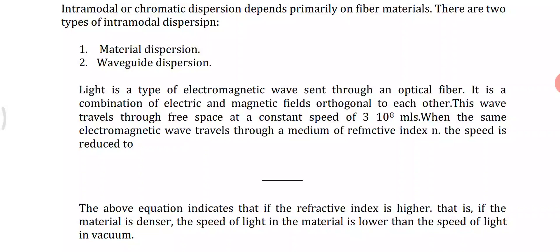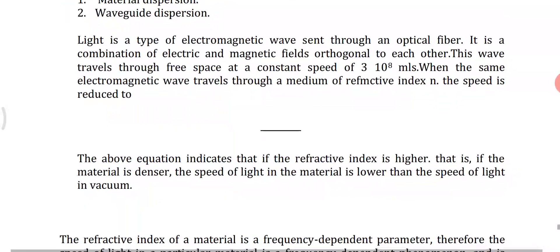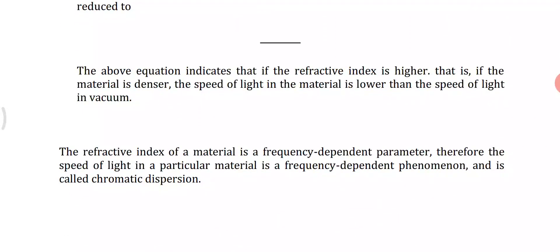When light travels through free space, it travels at a speed of 3×10⁸ meters per second. Because of the varying refractive index profile in a fiber, the speed is reduced. Since the refractive index of the material is a frequency-dependent parameter, the speed of light in a particular material is a frequency-dependent phenomenon — this is called chromatic dispersion or material dispersion. It causes the group velocity of any given mode to vary, producing pulse spreading even when different wavelengths follow the same path.